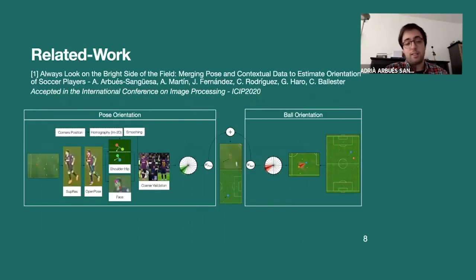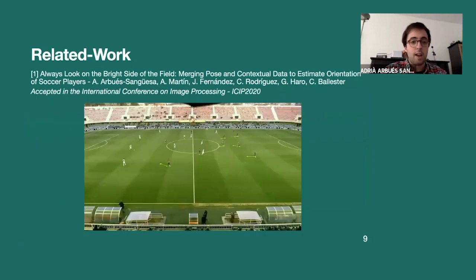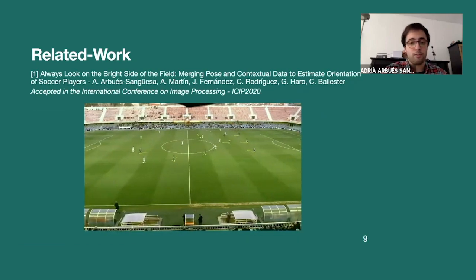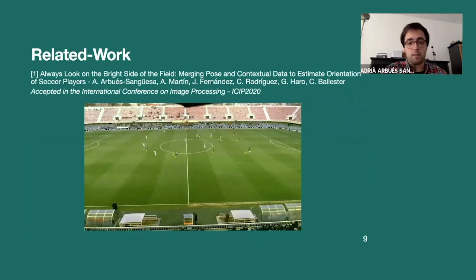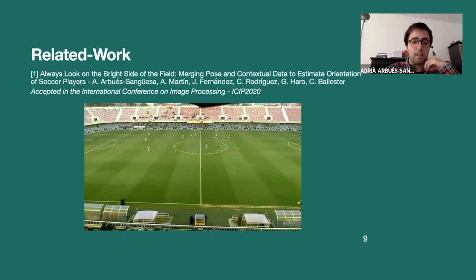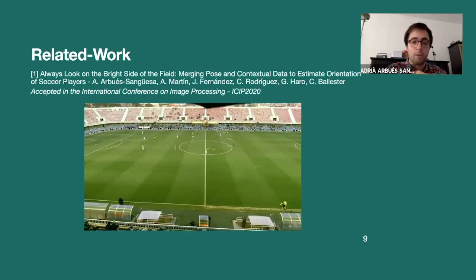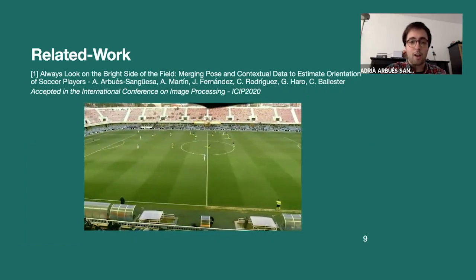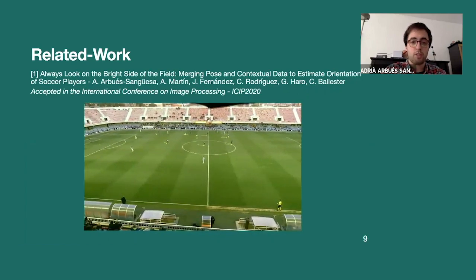Our related work is also a paper of ours that is called Always Look on the Bright Side of the Field, that as far as we know, is the only method that can output body orientation of soccer players given video data. And this uses OpenPose to get the coordinates of the four upper torso parts, which are shoulders and hips, and then projecting it into a 2D space and computing a normal vector, we can get one orientation value for each timestamp for each player.